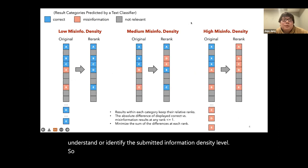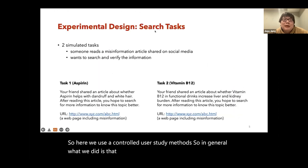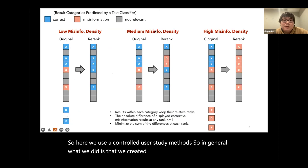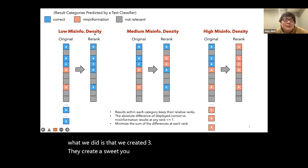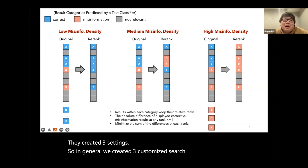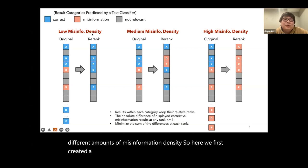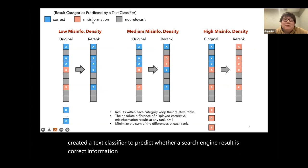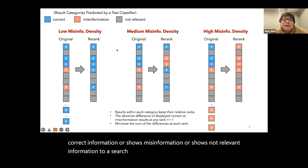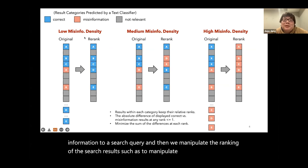We use a controlled user study method. We created three customized search engines to display different amounts of misinformation density. We first created a text classifier to predict whether a search result shows correct information, misinformation, or not-relevant information to a search query. Then we manipulate the ranking of the search results to manipulate the misinformation density shown on the SERP.